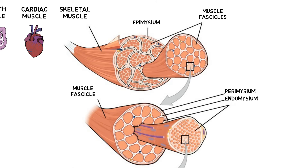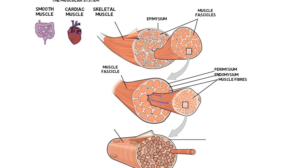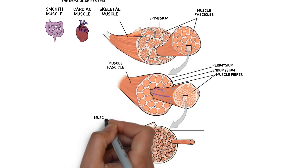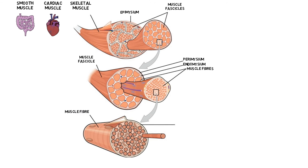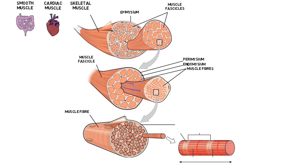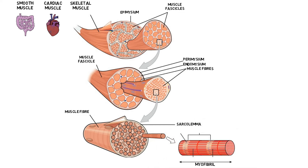Muscle fibers are elongated cells made up of numerous myofibrils. Myofibrils are cylinder-like structures that extend along the complete length of each muscle cell. And the sarcolemma is the cell membrane of a skeletal muscle fiber cell.